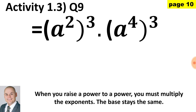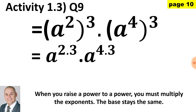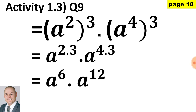Here in question 9, we first simplify by raising a power to the exponent — where the power is raised to the exponent, we multiply the exponents. Then we apply the second law of multiplying the same bases. So, a to the 2 times 3 and a to the 4 times 3 gives us a to the 6 multiplied by a to the 12. Now, the exponential law — where the bases are the same and multiplying — we would add the exponents.